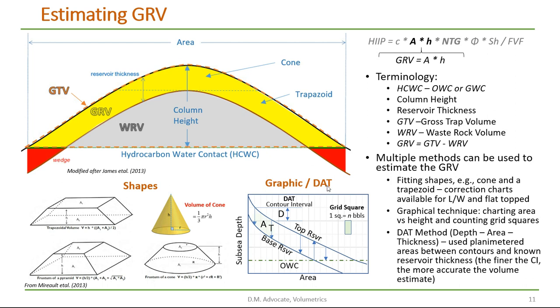The depth area thickness or DAT method is very similar to the graphic technique. But in this case we maintain a table of the planimetered area between the contours and the average thickness along the contour lines. And with that table we can calculate the gross rock volume.